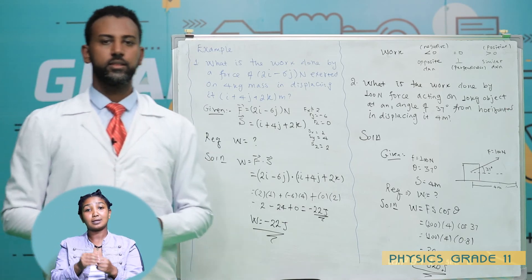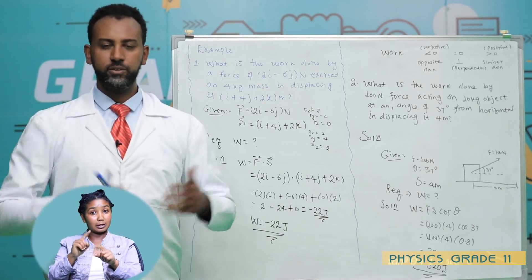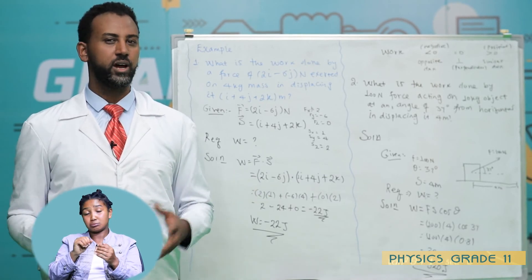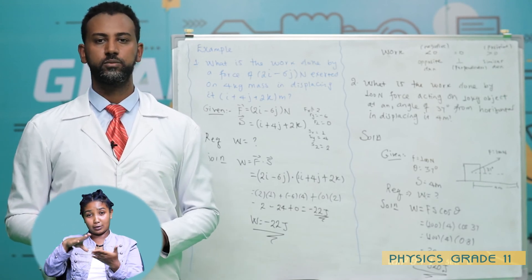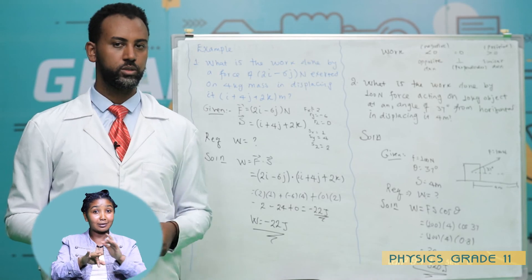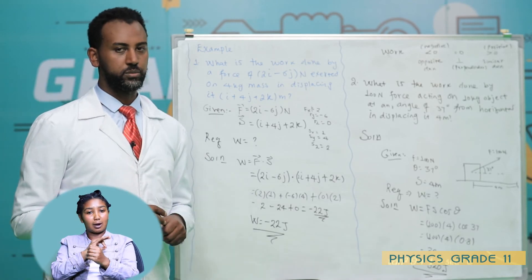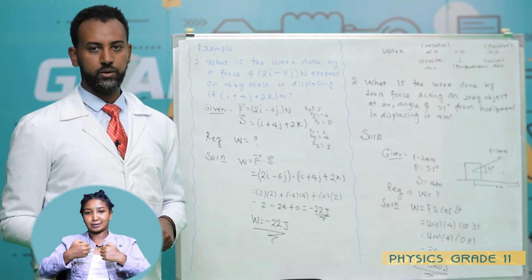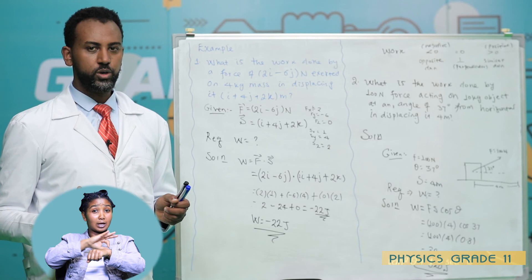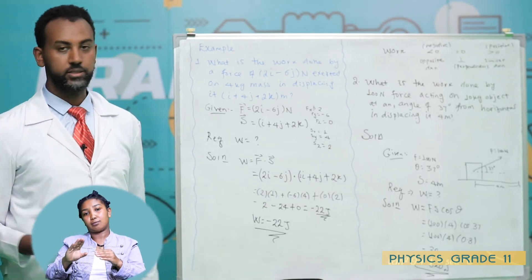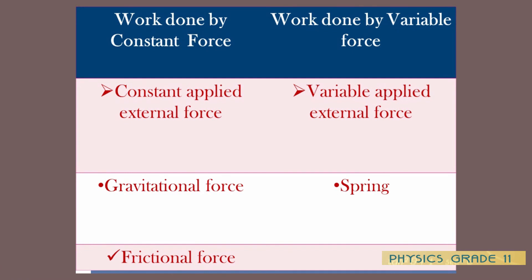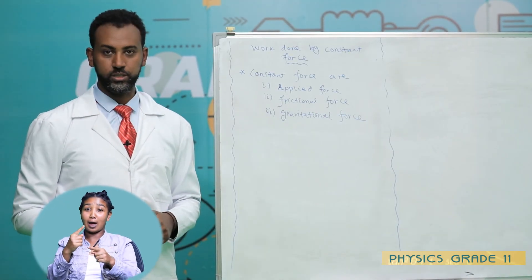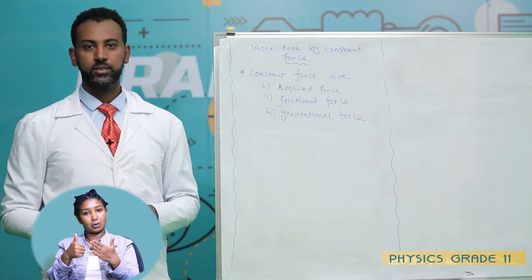Now let's look at the different types of work. Force can be constant or variable. Mechanical forms include frictional force, gravitational force, applied external force, and variable force like spring force. So we can categorize work into work done by constant force and work done by variable force. Next time we'll discuss these in detail. For today, that's all. See you next time.